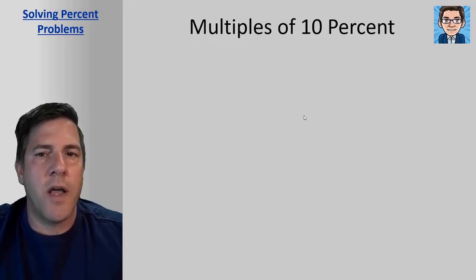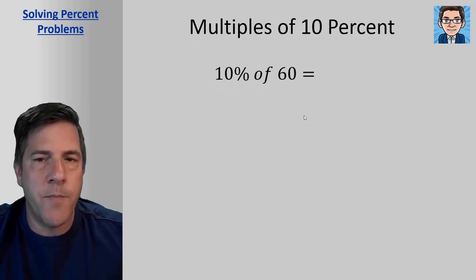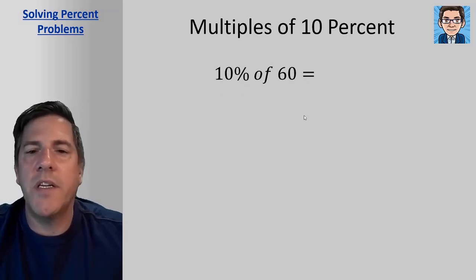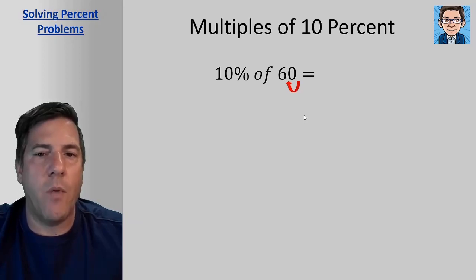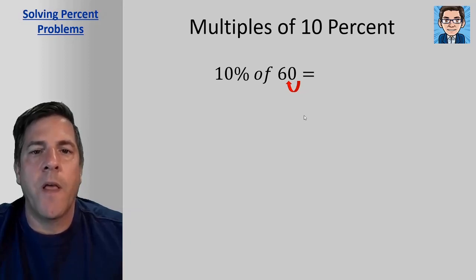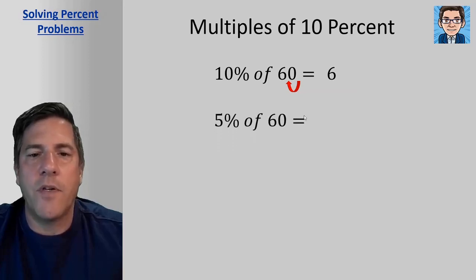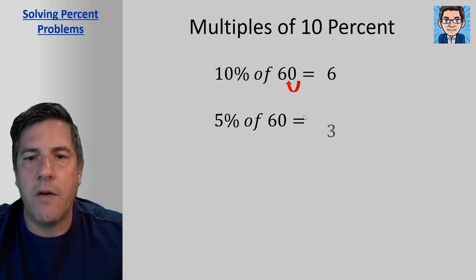Now multiples of 10% are easy to work with. A lot of times we can do these in our head. So if we're going to do 10% of 60, in order to do 10%, we just need to move the decimal point back one because we're taking one tenth. 10% is the same as one tenth, so that's going to be 6. So 5%, if 10% is 6, then 5% is just going to be half of that or 3.